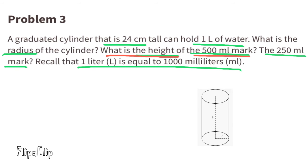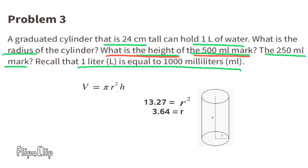This question also asks: what is the height of the 500 milliliter mark? Since 500 milliliters is half of 1,000 milliliters, the height is half of 24 centimeters, which is 12 centimeters. We could also substitute V with 500, then solve for h by dividing both sides by 13.27 times π, and h equals 12 centimeters.